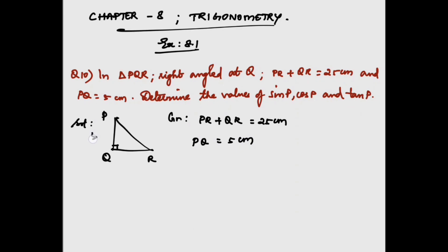We can consider QR as 25 - PR. Now, by Pythagoras theorem, PR² = PQ² + QR². By substituting the values, PR² = 5²...